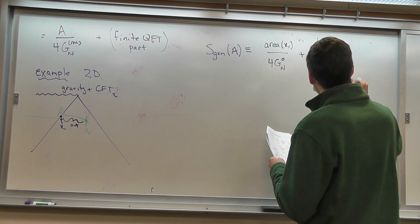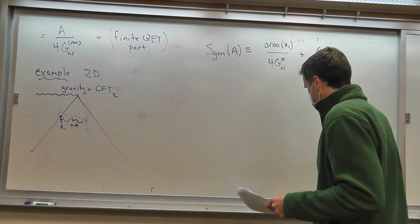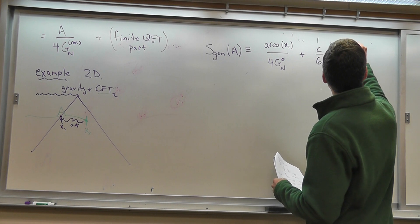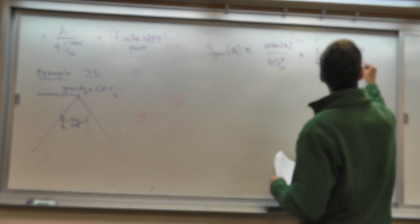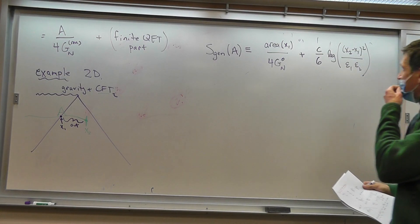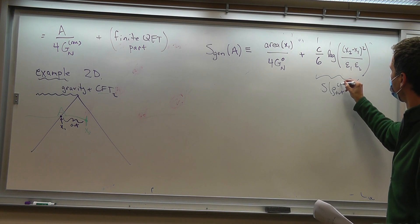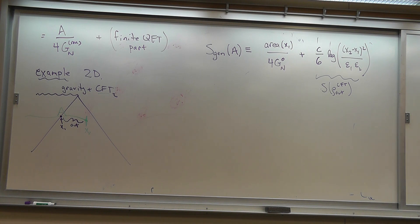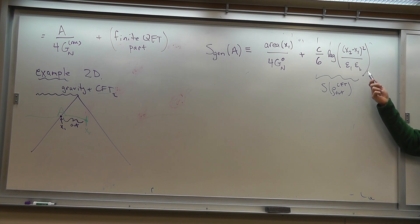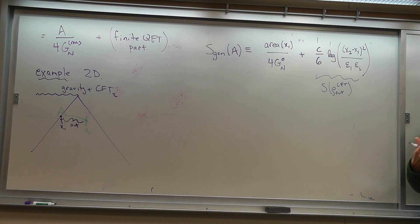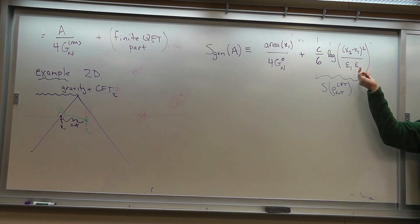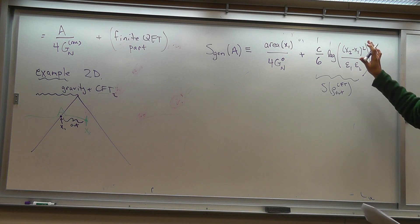We get C over 6 times log of (x2 minus x1) squared over (epsilon_1 epsilon_2). This is the contribution of the conformal field theory to S_out — S of rho_out of the conformal field theory. That's a calculation we did last time. The reason there's an epsilon_1 epsilon_2 is because last time we talked about the CFT in flat space; now we're talking about a CFT in curved space, which effectively changes the UV cutoffs.